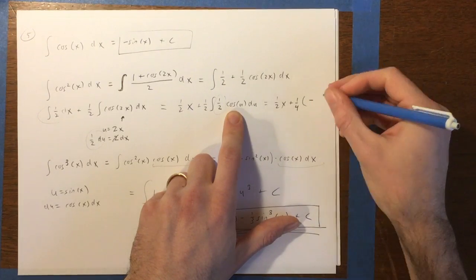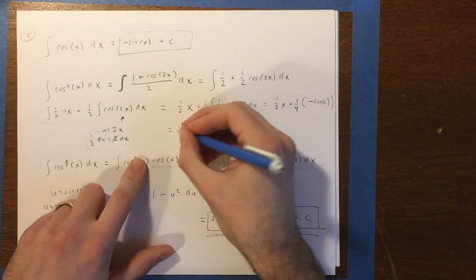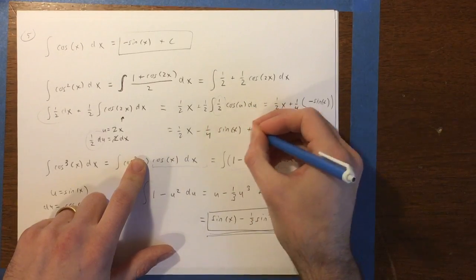is negative sine. So we've got 1 half x minus 1 fourth sin x plus c.